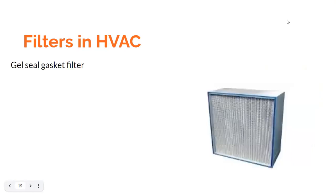One more filter to discuss is the gel seal gasket filter. This filter type uses a special type of gasket made of a gel-like material — either silicone or polyurethane. This gel becomes semi-solid once set. The gel is provided either in a channel in the filter or in the mounting frame, and a knife edge fixed in the mating component pierces through the gel, providing a leak-free seal. This self-healing gel gives a foolproof leak-free sealing, making it suitable for high efficiency HEPA filter applications.